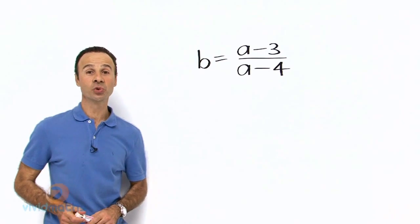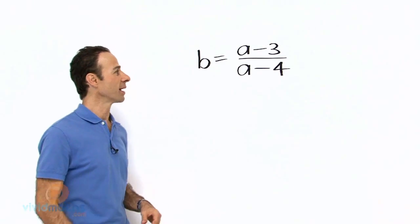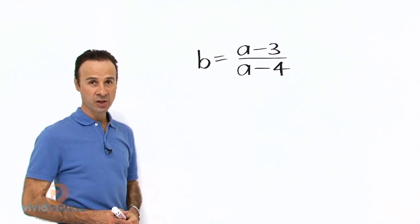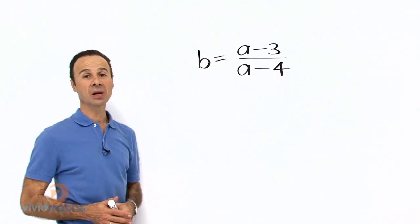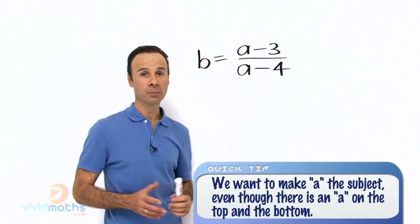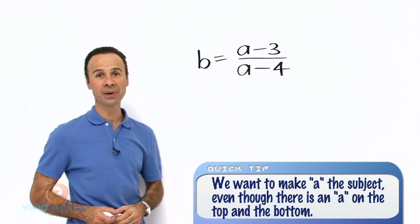Okay guys, here is our chance to do a really challenging question. What we got to do here is make A the subject of this formula. At the present moment, as you can see, B is the subject. So how do we make A the subject, particularly when there are two A's? On the top we have A minus 3, and again A minus 4 as the denominator.